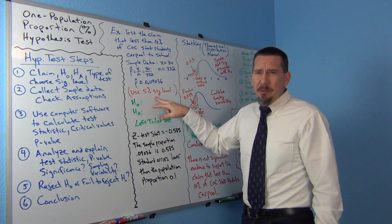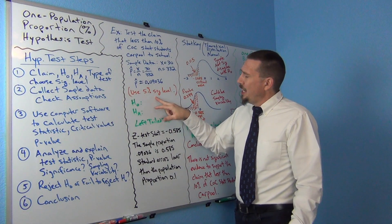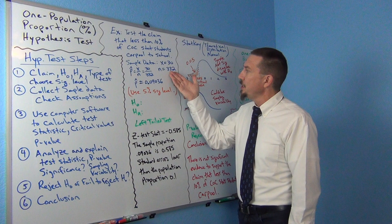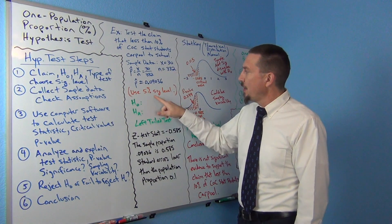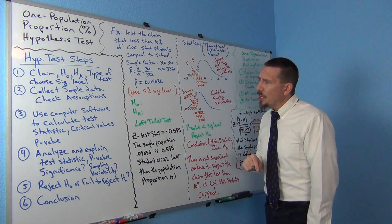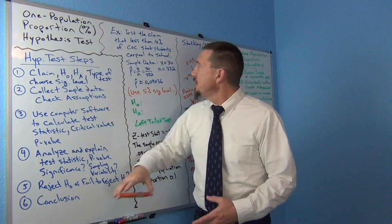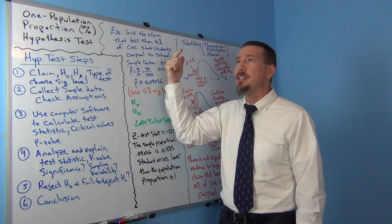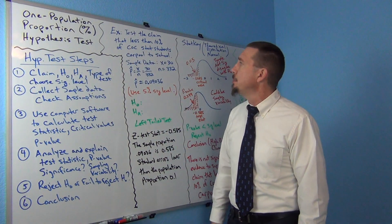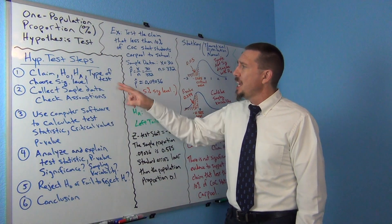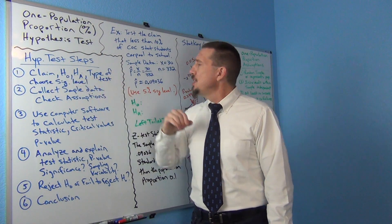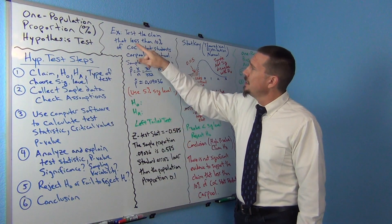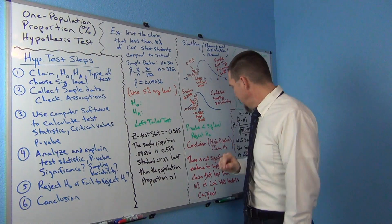I've decided to use a 5% significance level. I'm not particularly worried about type 1 or type 2 errors, and with a sample size of 332, I'm comfortable with 5%. Now, the null and alternative hypothesis: the claim is that less than 10% of COC stat students carpool, so this is a one population proportion test. We always start with the claim — the population percentage is less than 10%.